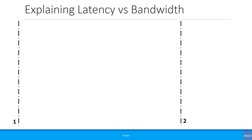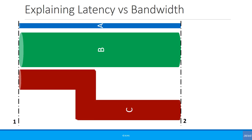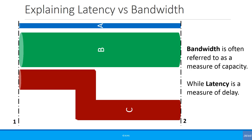People often ask if there is any relation between bandwidth and latency — and there isn't. Looking at a pipe example: a single packet takes the same time to travel from point 1 to point 2 regardless of whether it's in pipe A or pipe B (wider or narrower). However, in pipe C, even though the distance is the same, it takes longer for the packet to arrive, so the latency is higher. Bandwidth is a measure of capacity, while latency is a measure of delay.